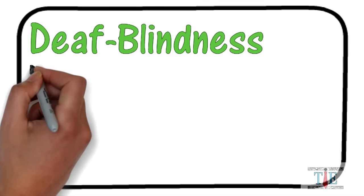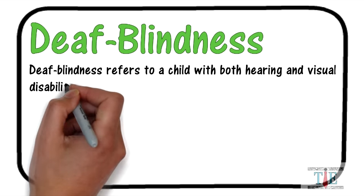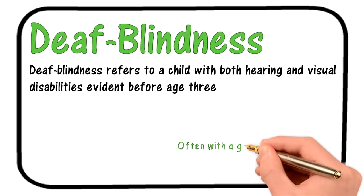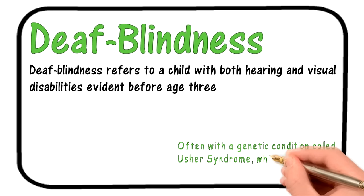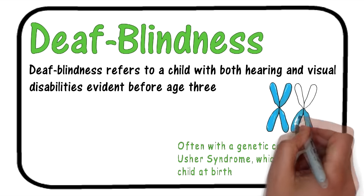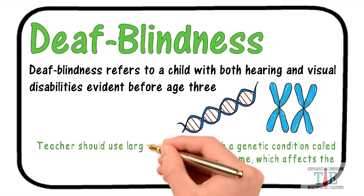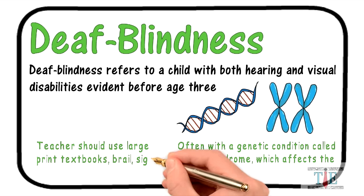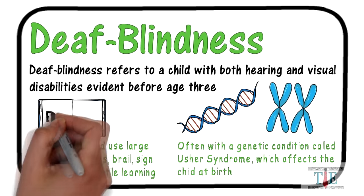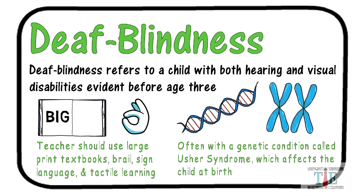The next category refers to a child with both hearing and visual disabilities evident before age three. These children often have a genetic condition called Usher syndrome, which affects a child at birth. The major symptoms of Usher syndrome are hearing loss. The teacher should use large print textbooks, braille, sign language, and tactile learning. There is a great variety of large print books available, and some educators have taken up learning sign language.